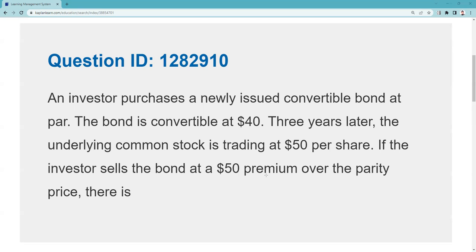The request that came up in Tuesday's live stream was QID 1282910. An investor purchases a newly issued convertible bond at par — you should know that means they paid $1,000 for that bond. The bond is convertible at $40. There is no Series 7 draw where you won't encounter a parity calculation. When you see the word 'convertible,' think: parity is coming. Parity means equal.